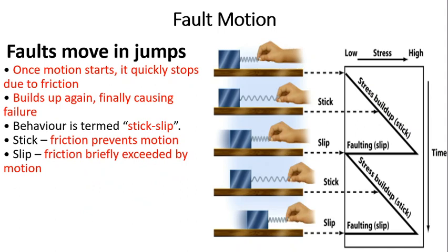Next comes fault motion. Faults move in jumps. Consider a block of weight tied to a spring, which is pulled to the right. If the force in the spring exceeds the frictional force of the surface, the block will show a sudden movement and stop very suddenly due to friction. When the stress builds up it is called a stick; when the stress is released and the block starts moving, it is called slip. The same stick-slip effect takes place between crustal movements or plate tectonics, resulting in the sudden release of energy we call an earthquake.